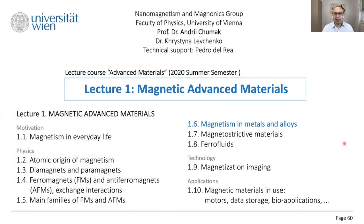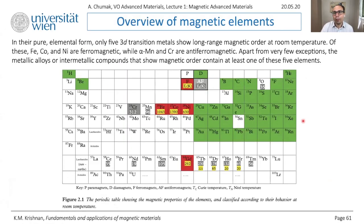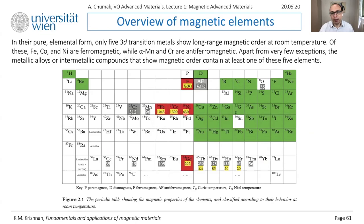Today we are ready for lecture 1.6, which is devoted to magnetism in metals and alloys. This is the table of elements we have seen already. Ferromagnetic materials are in red, diamagnetics in green, ferrimagnetics in white, anti-ferromagnetics in gray, with Curie temperature and Néel temperature shown. Now we can fully understand this picture. The question is: you see three elements here — iron, cobalt, and nickel — all with Curie temperature above room temperature, all metals. Why particularly these three elements are magnetic and not the rest?